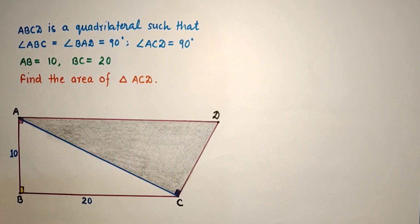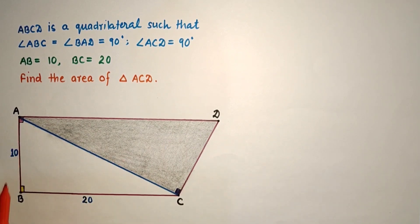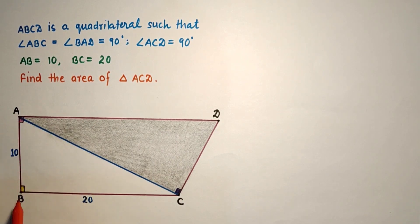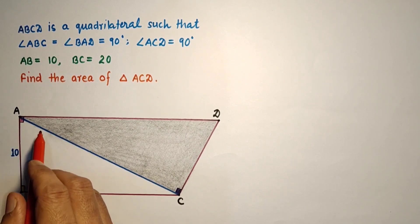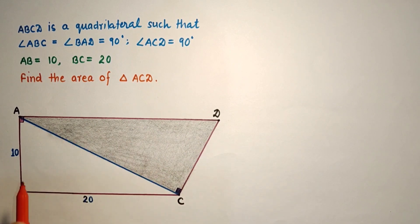Hello everyone, welcome to this channel. In the given question, ABCD is a quadrilateral where angle ABC equals 90 degrees, angle BAD equals 90 degrees, and angle ACD equals 90 degrees. The length of BC is 20 units and AB is 10 units. We have to find the area of this shaded triangle, that is, the area of triangle ACD.